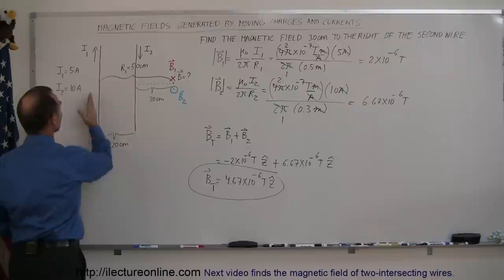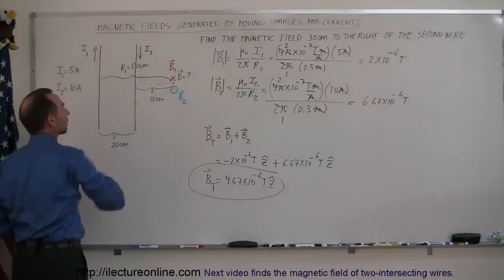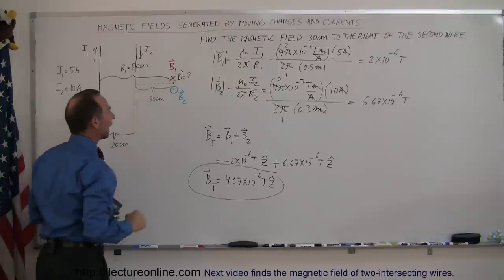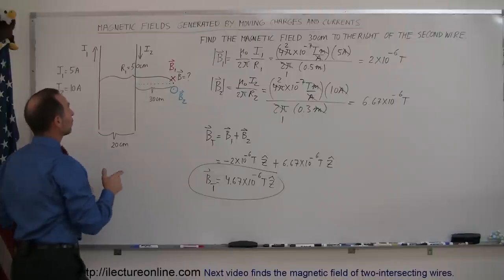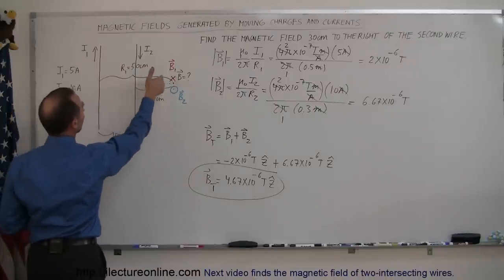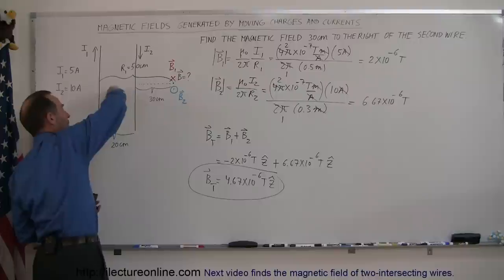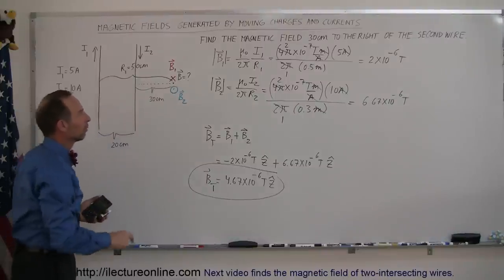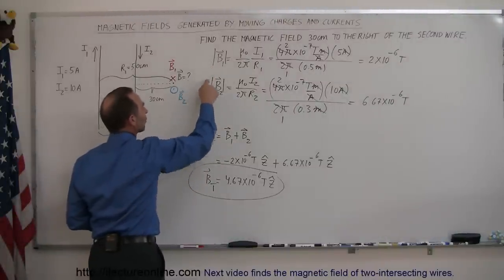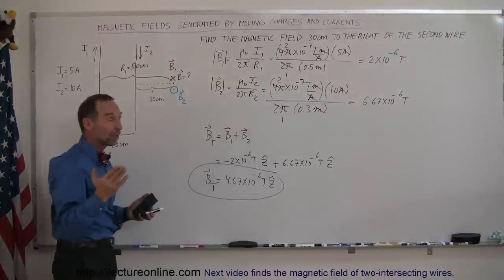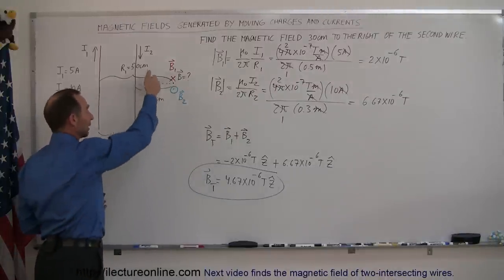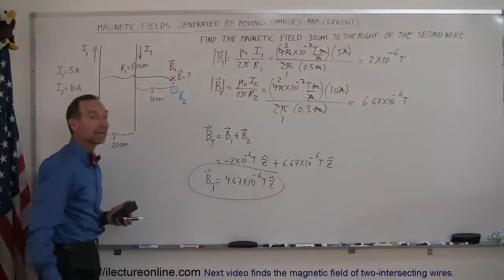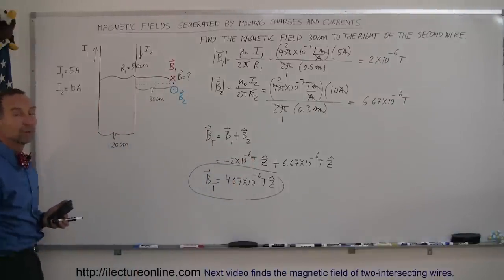To recap: we have two wires side by side, one carrying a current up and the other carrying a current down. Each wire contributes a magnetic field at the point of interest. First, find the direction of each — if the current goes up, the field is into the board to the right; if the current comes down, the field is out of the board to the right. Then find the magnitude of each contribution, call one negative and one positive, add them together, and you get the total magnetic field.